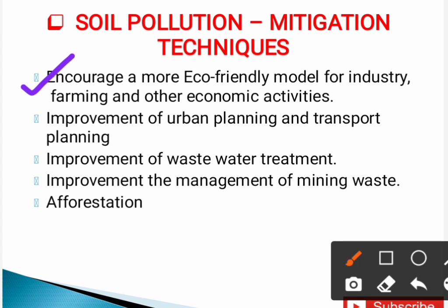Soil pollution can also be reduced by decreasing the use of pesticides and fertilizers. Next is improvement of urban planning and transport planning — proper planning improvements in rural and urban areas can help reduce soil deterioration.